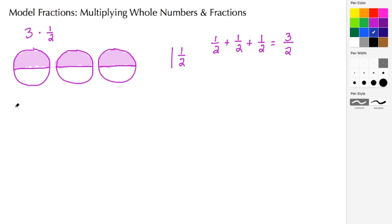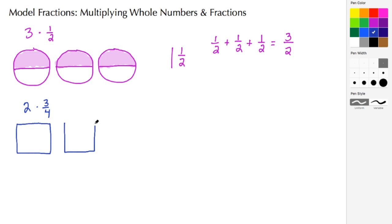For our next example, let's do two times three-fourths. This time we're going to do squares. We have two wholes, so I'm going to draw in two squares. The fraction three-fourths has a denominator of four, so that means each one of these squares needs to be broken into four equal pieces.